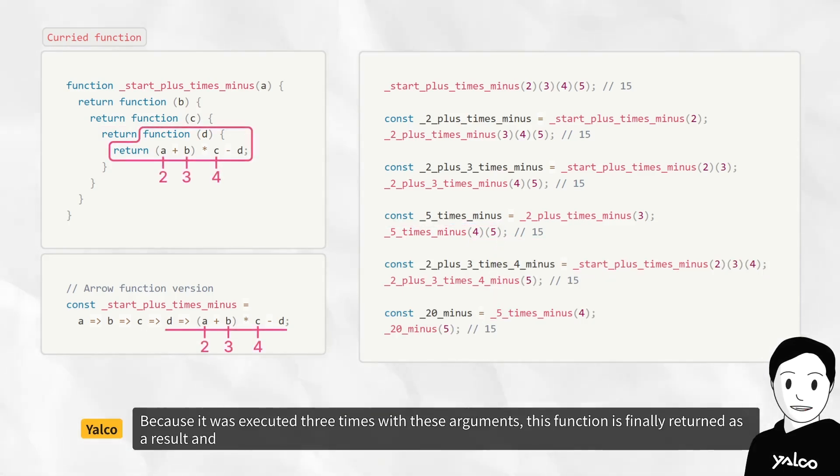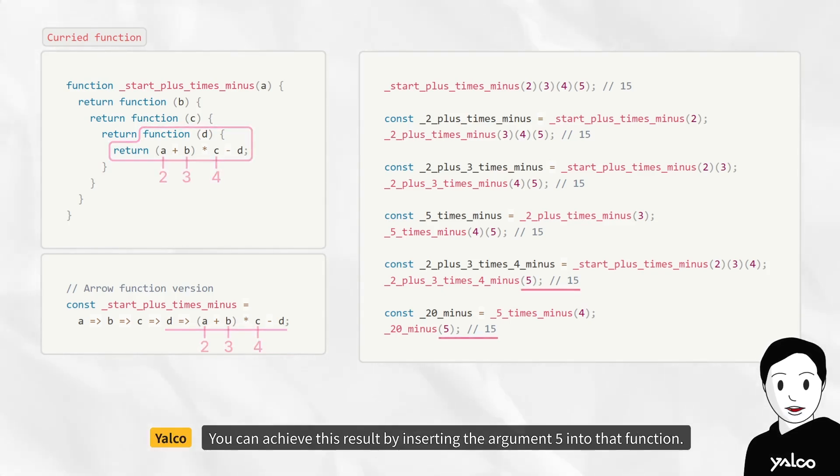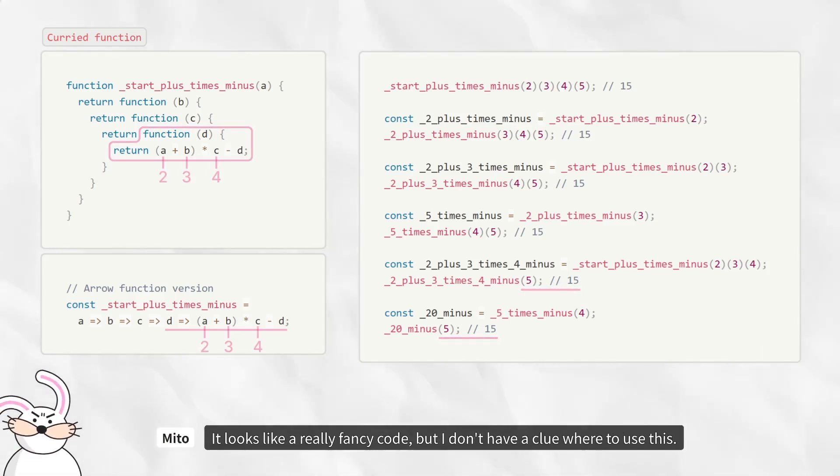Because it was executed three times with these arguments, this function is finally returned as a result. And you can achieve this result by inserting the argument 5 into that function. It looks like a really fancy code, but I don't have a clue where to use this.